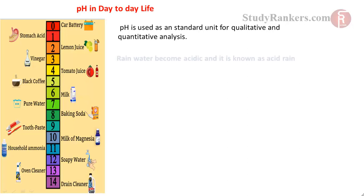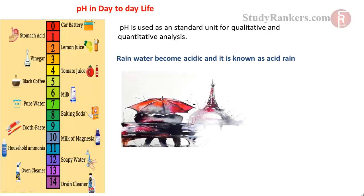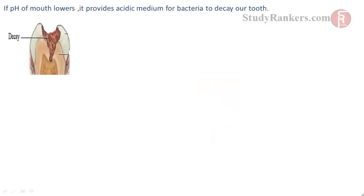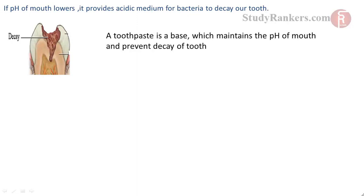pH plays an important role in our lives. The pH of rainwater decreases when gases like sulfur dioxide mix with it — the rainwater becomes acidic and is known as acid rain. It damages our skin, the human body, as well as plant functions and their metabolism. If the pH of the mouth lowers, it provides an acidic medium for bacteria to decay our teeth.